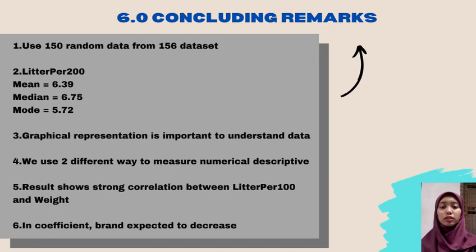In conclusion, this report has taught our group using the right weight of data set. We chose 150 random data from 156 data set in SPSS and also four variables which is liter per 100, KPL, weight and brand to complete this report. SPSS data are used to measure mean, median and mode for liter per 200. The results show mean at 6.39, median 6.75 and mode 5.72.